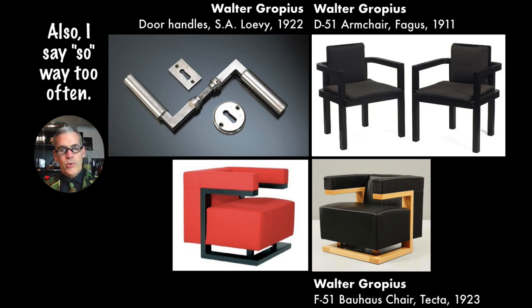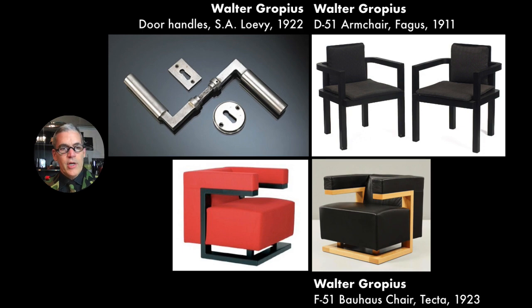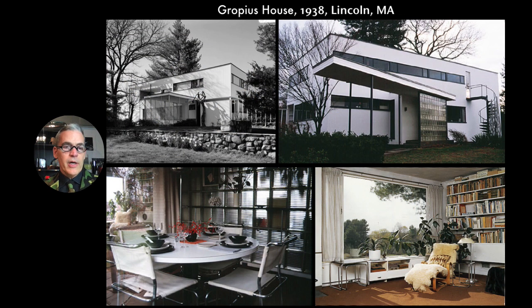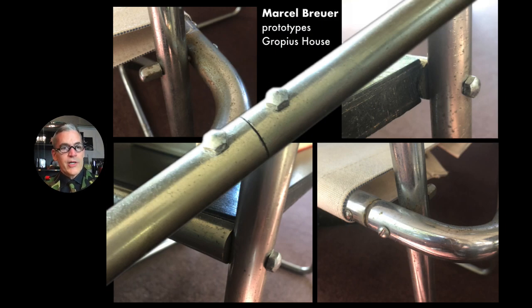I want to show you a parade of related designers — people who were at the Bauhaus and people who were adjacent to it. Walter Gropius's work shows an interest in geometry and a lack of surface decoration. When he moved to America, he built a house in Lincoln, Massachusetts, and when fleeing the Nazis he was allowed to bring his furniture. At the time it may have seemed like some prototype furniture, but it has aged into a remarkable collection of really important furniture that is very exciting to see in person.